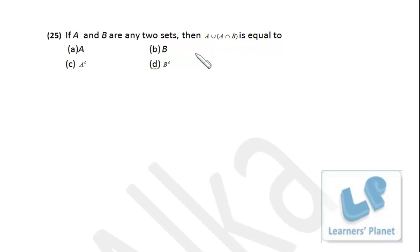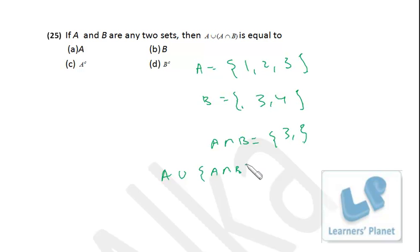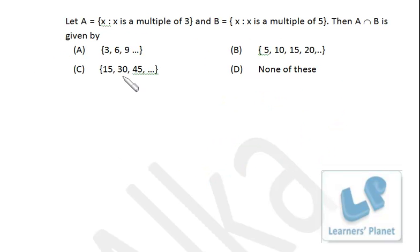If A and B are any two sets, what is A∪(A∩B)? Assume A = {1, 2, 3} and B = {3, 4}. Then A∩B = {3}. So A∪(A∩B) = {1, 2, 3}∪{3} = {1, 2, 3}, which is nothing but set A itself. This makes sense because every element in A∩B is also in A, so A∪(A∩B) = A.